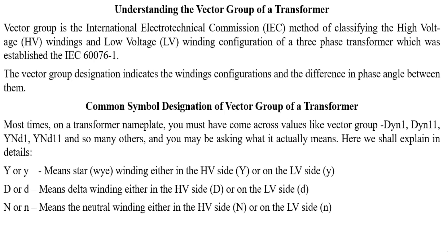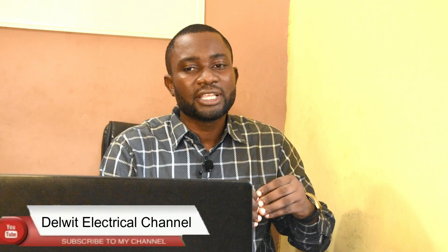If you want to understand basically how this operates, you need to see how a transformer is connected both in delta connection and in star connection. When you do this, you will be able to understand the vector group of both systems. We will first go into the star connection and later the delta connection. For both connections, the phase shift is very important.